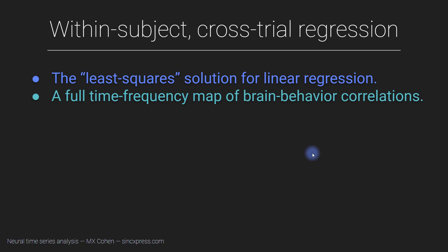However, there are often interesting dynamics that are happening within each individual across different trials. So it's also useful to know how to do within-subjects analyses, and in particular cross-trial analyses. In this video I'm going to introduce you to cross-trial regression. Sometimes these kinds of analyses are called single-trial analyses, but that term is a bit of a misnomer because generally you're not actually analyzing a single trial — you're still doing the analyses across all the trials.